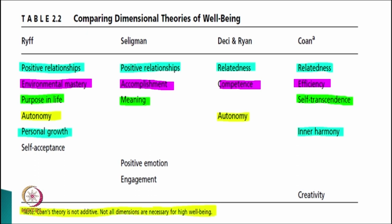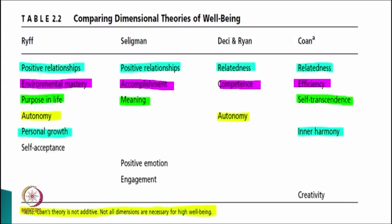For example, positive relationships — almost all scholars have highlighted the role of positive relationships, whether it is psychological well-being, the PERMA model, the need model, or Korn's model. All of them give importance to social relations. Second, environmental mastery, accomplishment, competence, and efficiency are also connected across models. Purpose in life, meaning, and self-transcendence can be connected with each other. Autonomy has been highlighted by the psychological well-being model as well as Deci-Ryan's model. Personal growth and inner harmony share some variance. On the other hand, self-acceptance, positive emotion, engagement, and creativity are to some extent independent variables found in different theories.